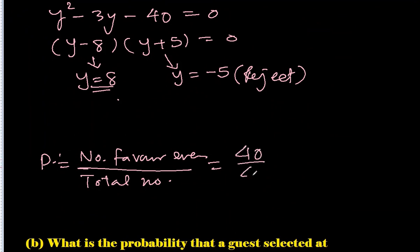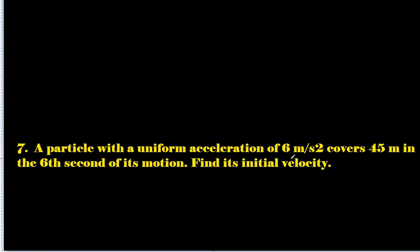And total we have 48, we know that. So it will be 40 over 48, and that's the probability of 5 over 6.